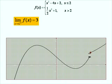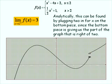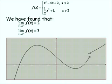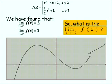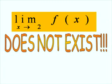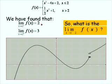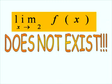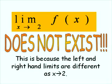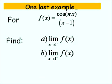The limit of this function as x approaches 2 from the right is 3. Analytically, this is found by plugging 2 into the bottom piece, since the bottom piece gives us the part of the graph to the right of 2. So we have: the limit as x approaches 2 from the left of f of x is 2, and the limit as x approaches 2 from the right of f of x is 3. Therefore, the two-sided limit as x approaches 2 does not exist, because the one-sided limits are different — they must approach the same value.